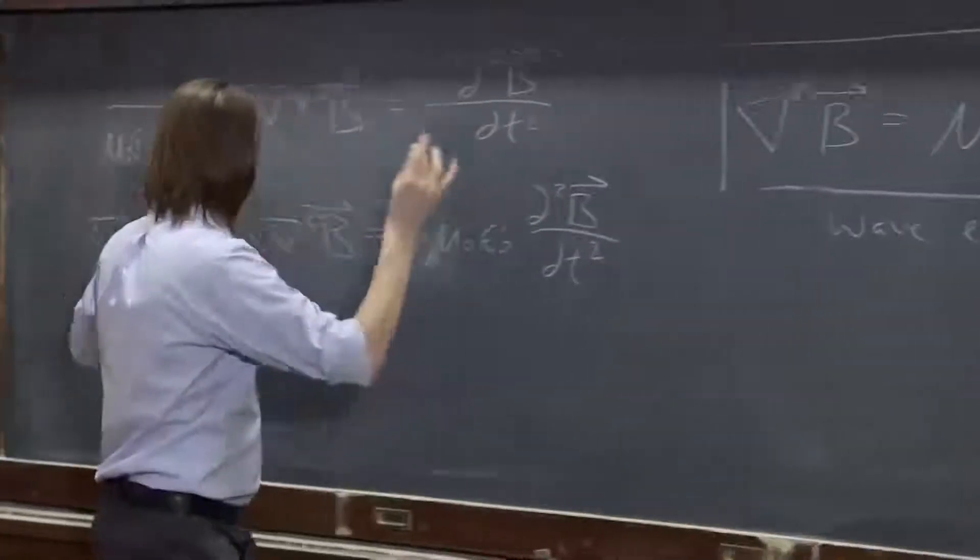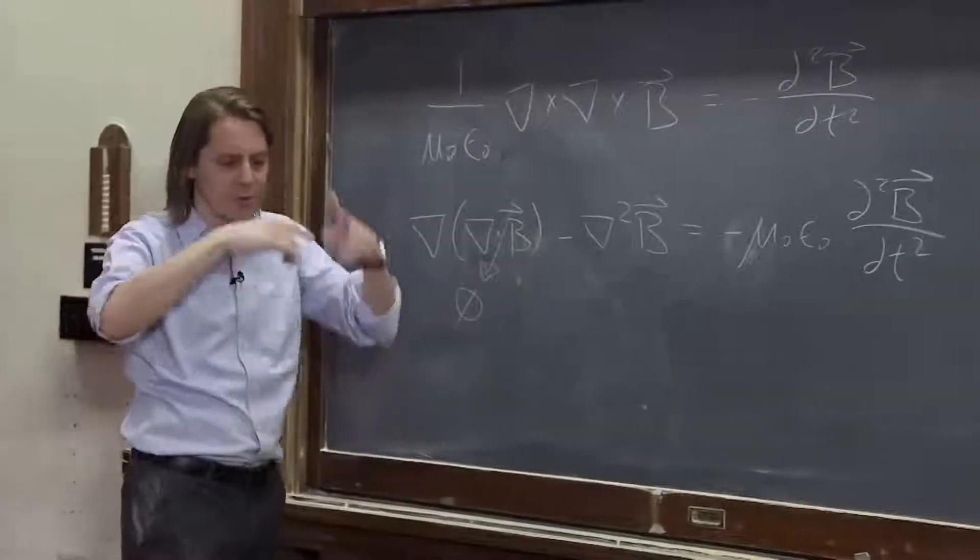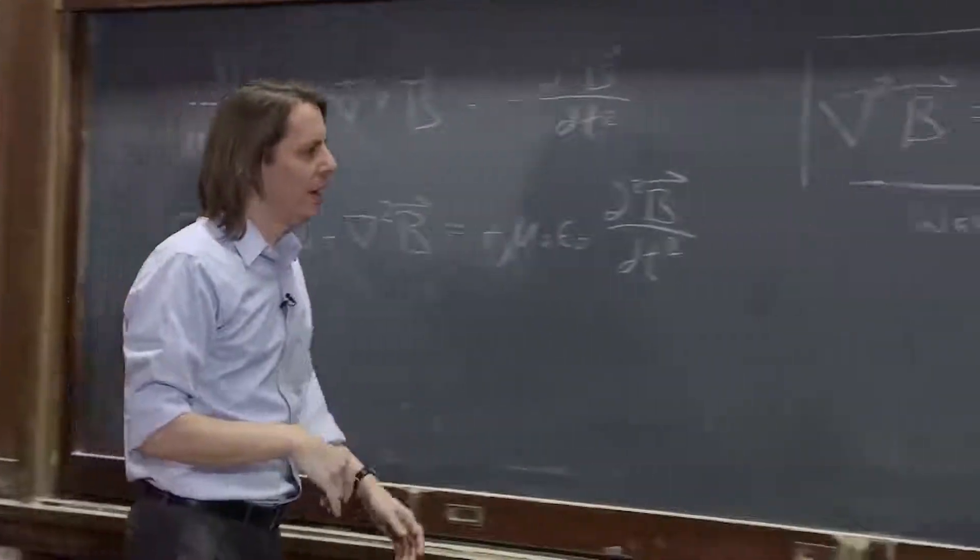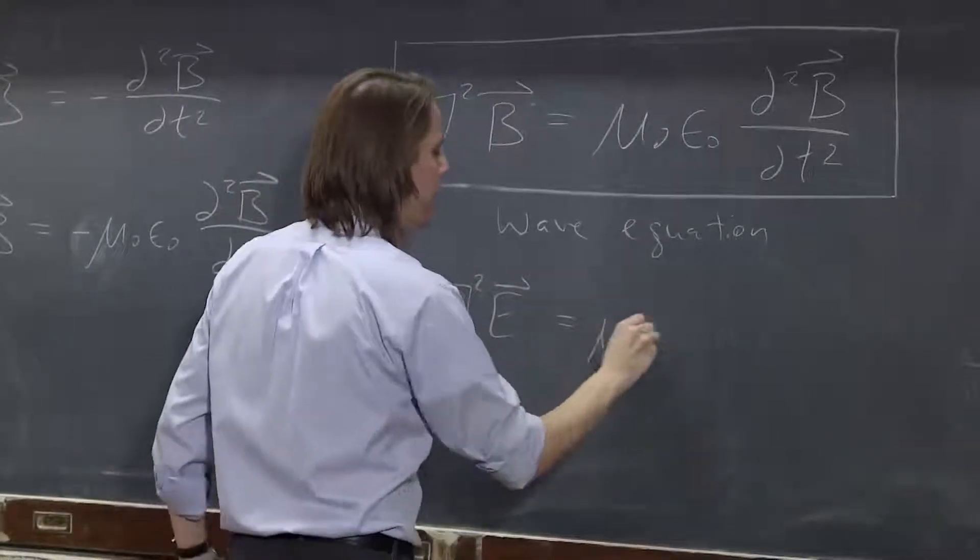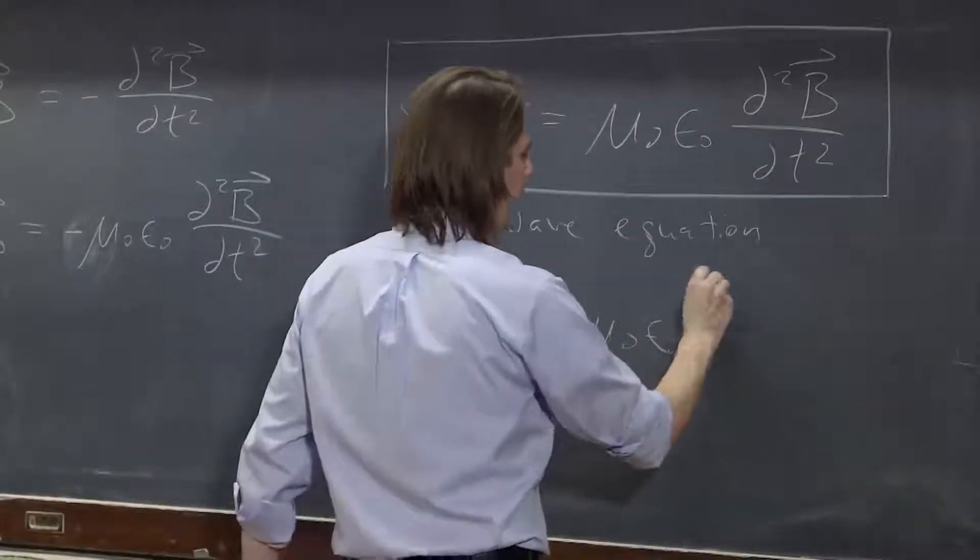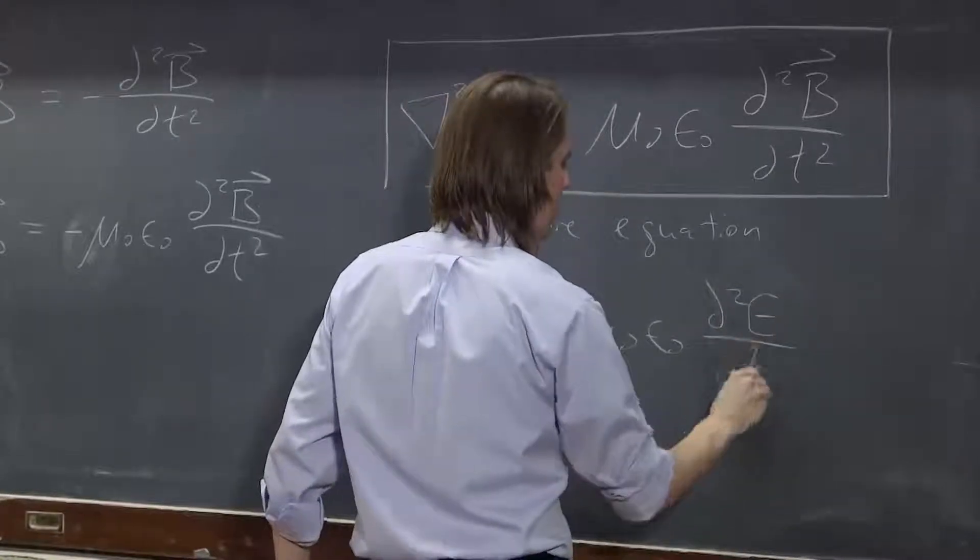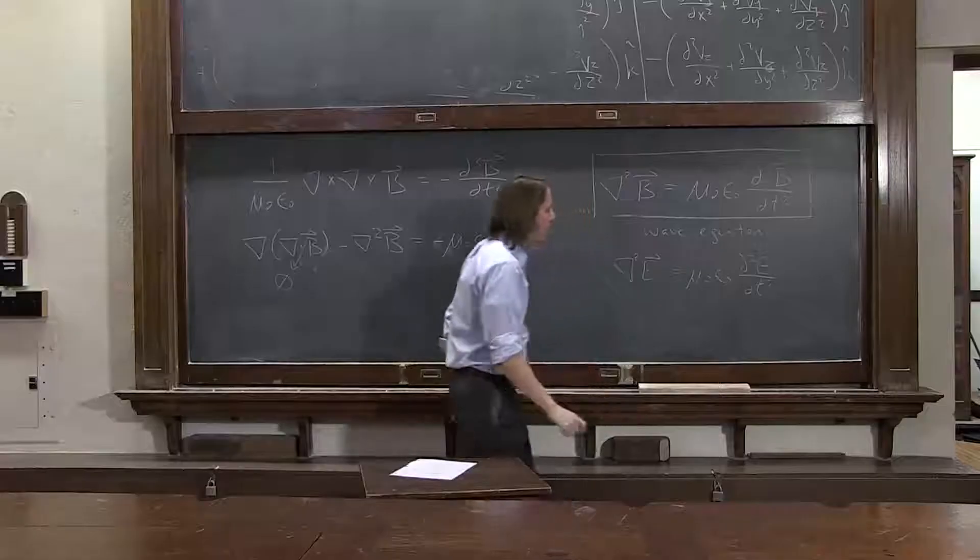If we were to do this whole thing with the E field, we could. You just substitute different ones. Since you take a derivative of something else, and you get del squared E is mu naught epsilon naught d2E dt2.